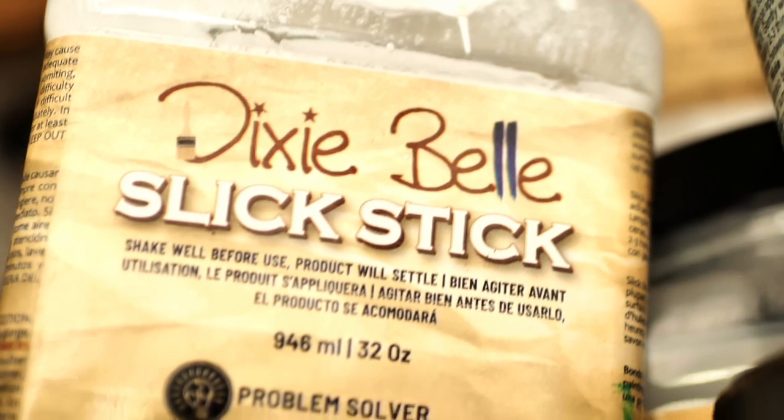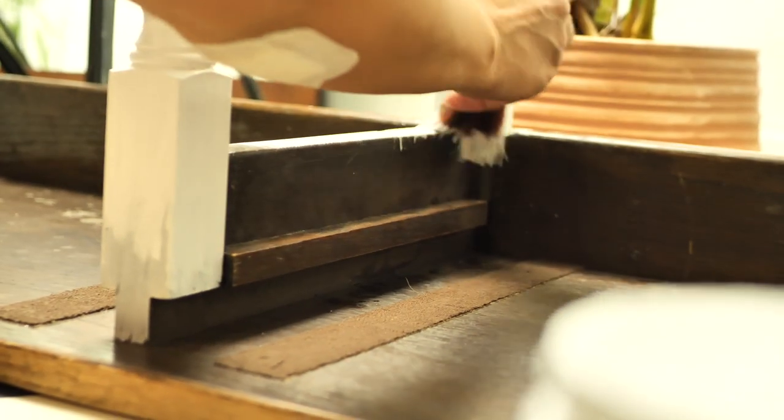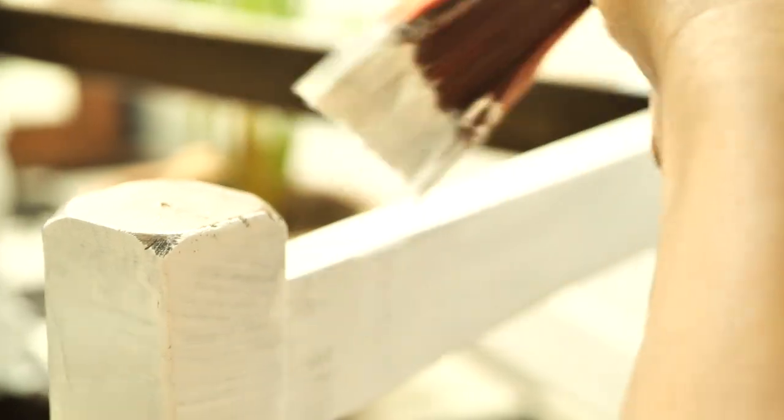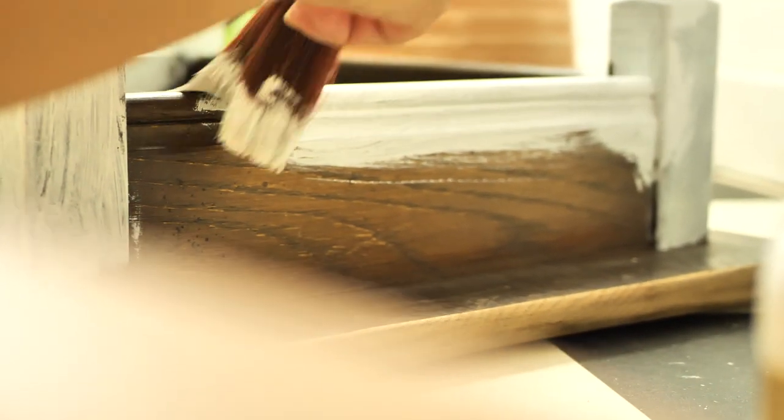We let it dry for a few hours and then we apply Slick Stick. Slick Stick is an adhesion primer, great for shiny surfaces, glass, plastic, metal. It is a must-have product. We list it in this tutorial description if you want to check it out.